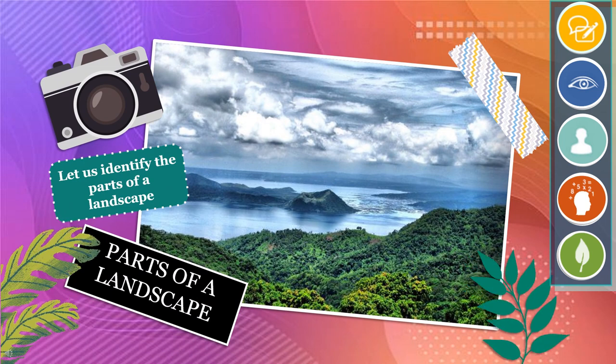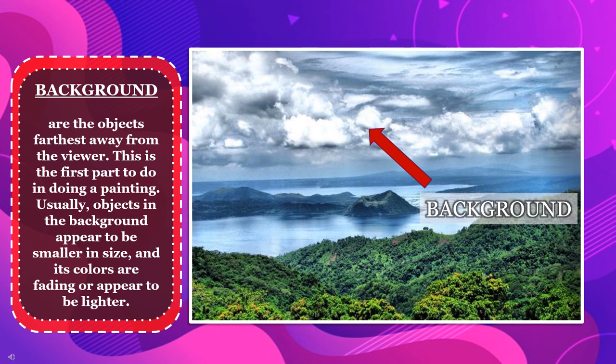Now let us identify the parts of a landscape. Background: these are the objects farthest away from the viewer. This is the first part to do in a painting. Usually, objects in the background appear to be smaller in size, and its colors are fading or appear to be lighter.